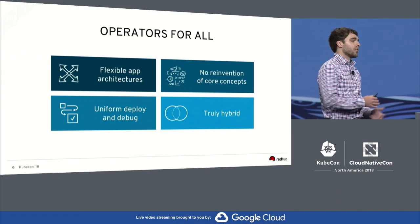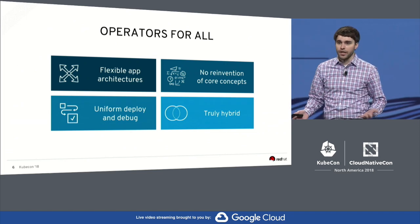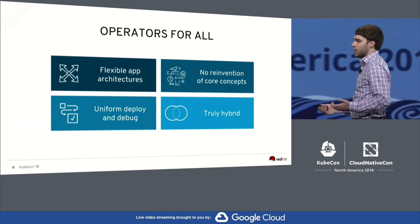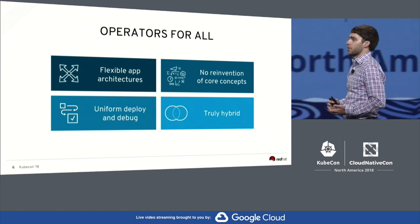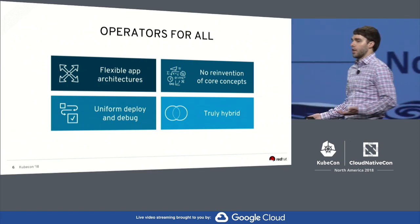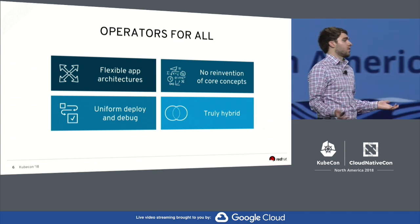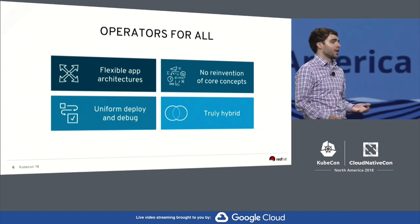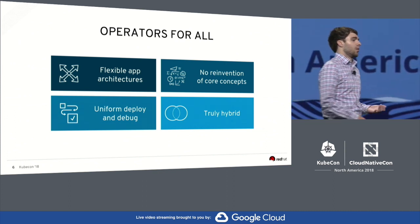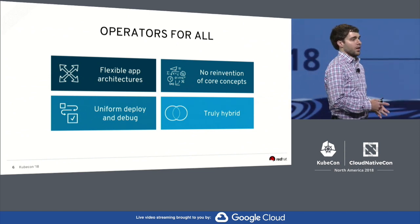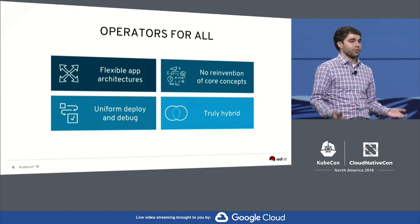The great thing about an operator is flexible architectures — you can run any distributed system on Kubernetes, and that's anything. You have flexibility to build all kinds of tiered architectures, whatever you need. Most importantly, because you're using Kubernetes under the hood, you're not reinventing core concepts. Nobody needs to reinvent service discovery or secret handling — it's all done by the community, and it's done really well.